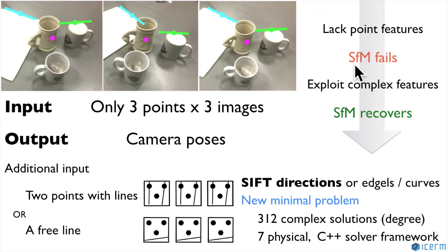With only three correspondences across three views, we can solve for camera pose by using orientations on at least two points.